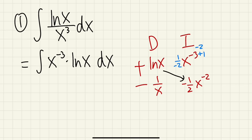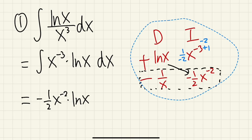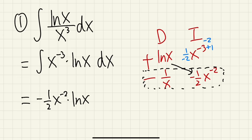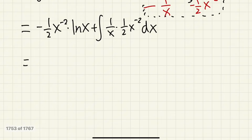When we multiply these, that's the first part of the answer: negative 1/2 x to the negative 2 times ln(x). Then we multiply the other two things and put that inside an integral. Negative times negative gives us a plus integral, and we have 1/x times 1/2 x to the negative 2. So the first part is negative ln(x) over 2x squared.